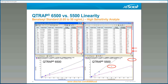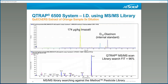Here's one comparison between the 6500 and the 5500 system showing the wider linear dynamic range for quantitation for an example compound, Benaloxyl, where the upper points of the calibration curve have had to be removed for the 5500 system.